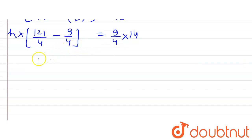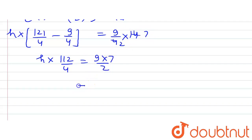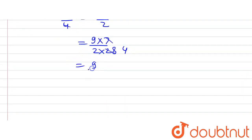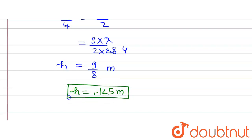Further solving: H multiplied by 112/4 equals 9 multiplied by 7 divided by 2. Simplifying, 112/4 equals 28, so 28H equals 63/2. Dividing both sides by 28, and simplifying, H equals 9/8 meters, which equals 1.125 meters. This is the height of the embankment, which is what we were asked to find in the question.